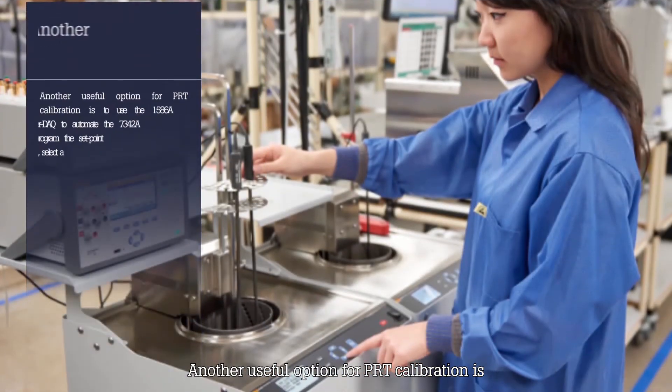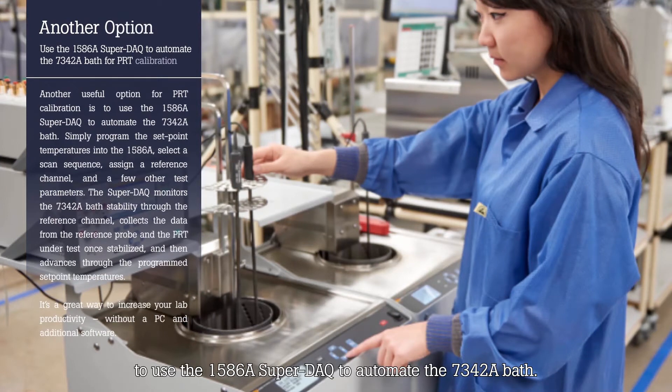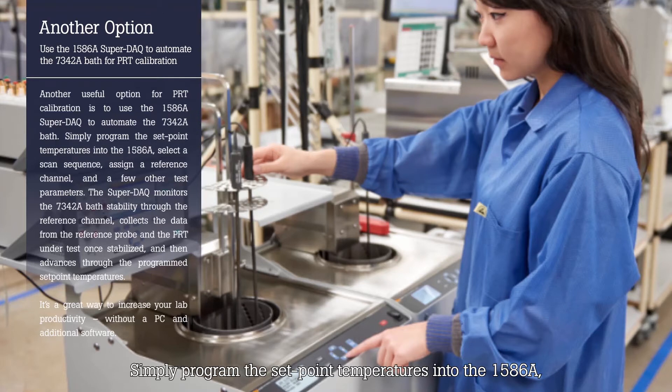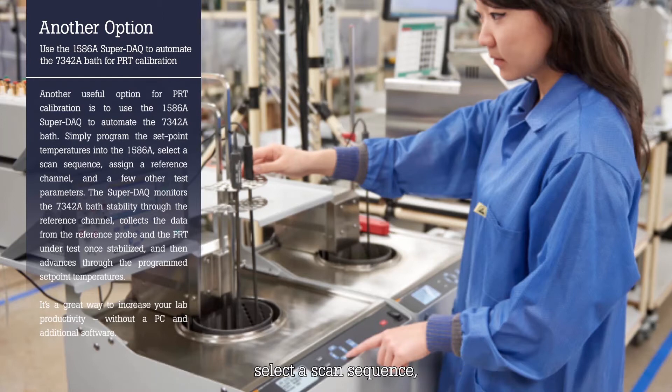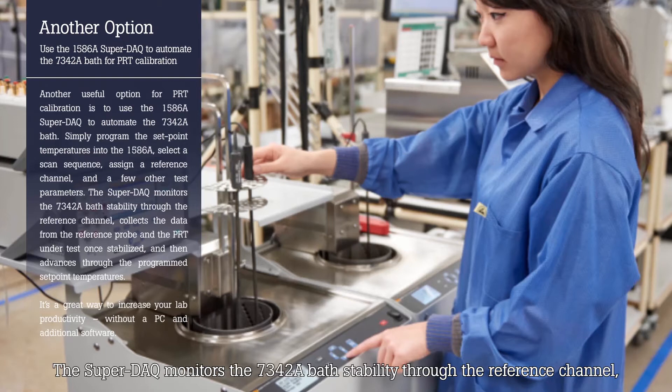Another useful option for PRT calibration is to use the 1586 Super-DAC to automate the 7342 bath. Simply program the set point temperatures into the 1586, select a scan sequence, assign a reference channel, and a few other test parameters.